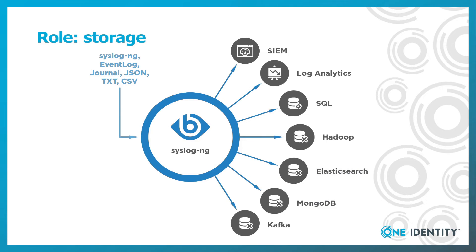Traditionally, log messages were saved to text files either locally or on a remote Syslog server. Support for SQL was added first as an alternative, which was followed by many other possibilities. Today, you can store messages to various SIEM and log analytics systems, Hadoop, various NoSQL databases like MongoDB or Elasticsearch, cloud services like Sumo Logic or Slack, and also some message queuing systems like Kafka. You can write your own destinations using Java and Python as well.